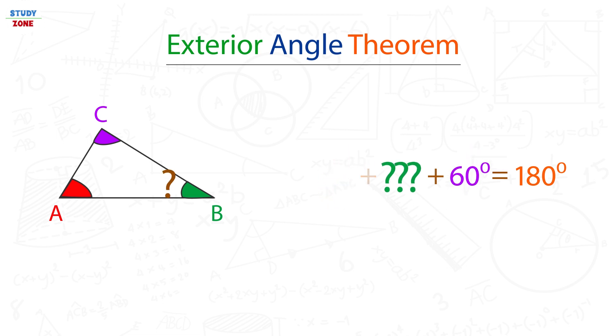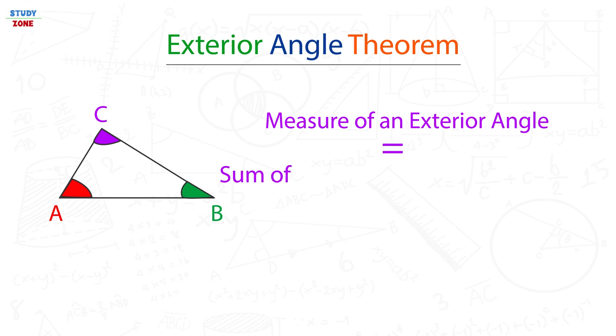In this tutorial we are going to learn the exterior angle theorem, which says that the measure of an exterior angle of a triangle is equal to the sum of non-adjacent interior angles of the triangle.